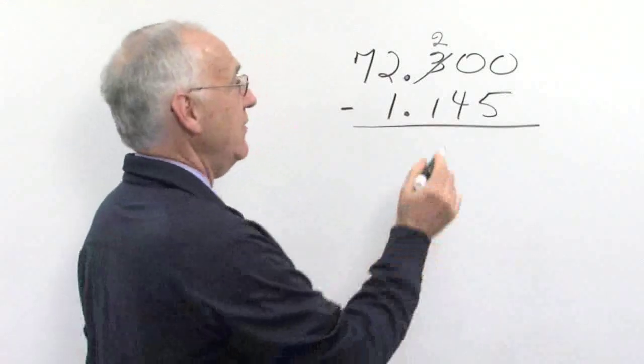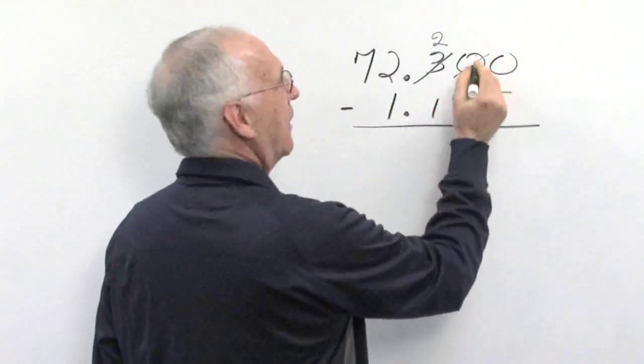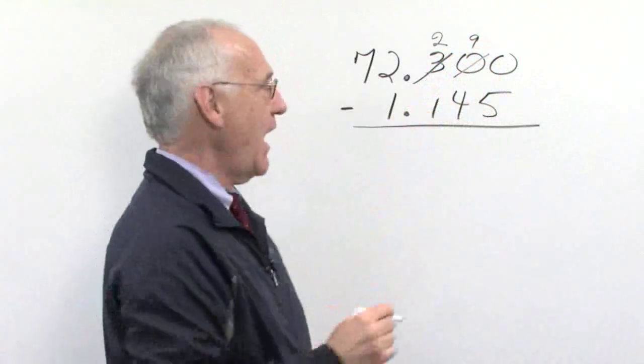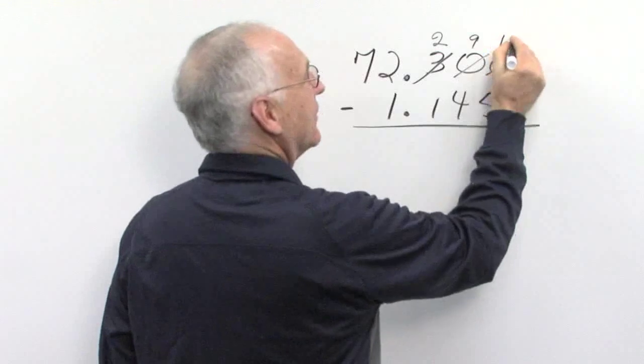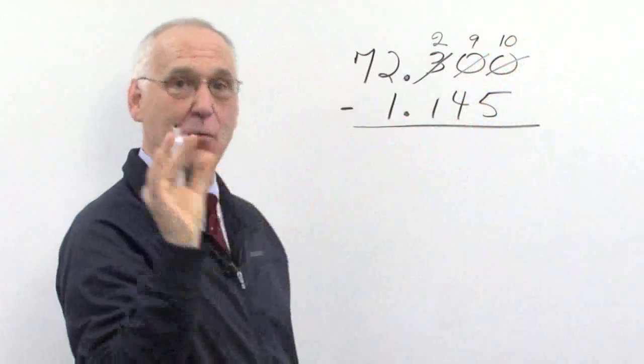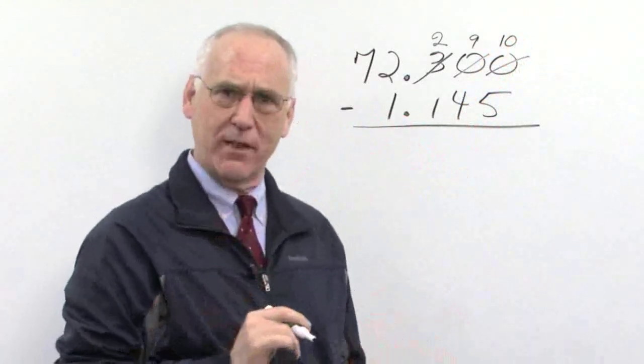In this case, now this zero becomes nine hundredths. And this zero becomes one one-thousandths. Or actually I should say ten one-thousandths. I got to get that right. Ten one-thousandths.